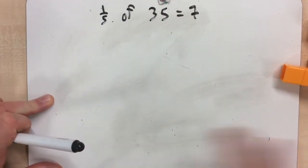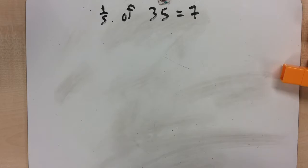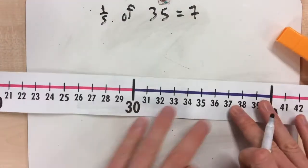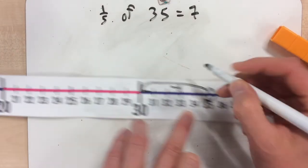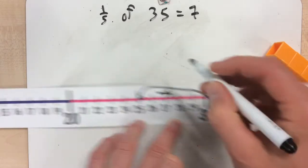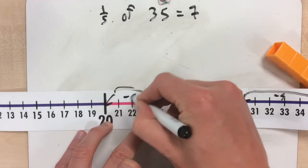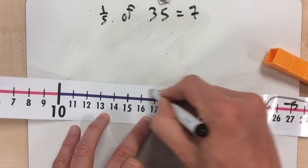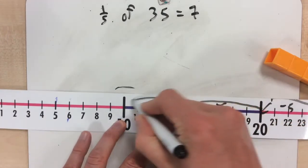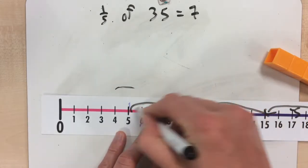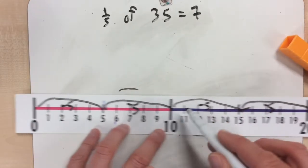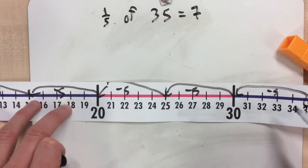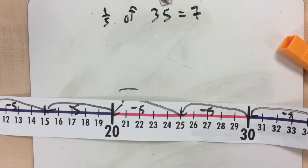Another way that I can show this is using a number line. If I start on 35, I'm going to take away 5 seven times, landing on 30, 25, 20, 15, 10, 5, and 0. So I made 7 jumps of 5. Same as our answer before — 1/5 of 35 is 7.